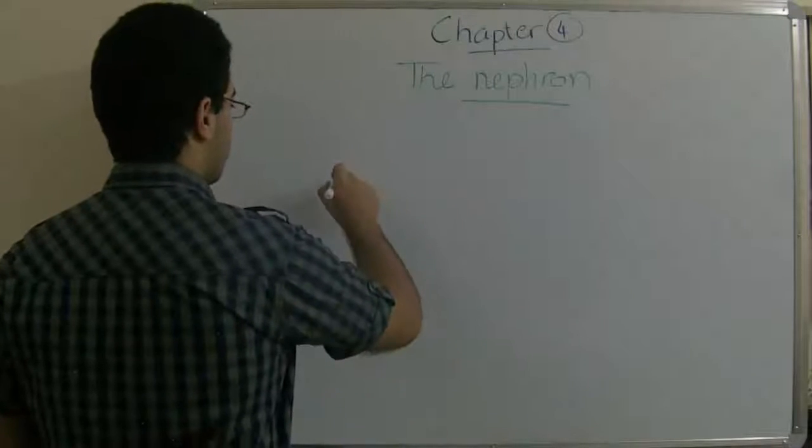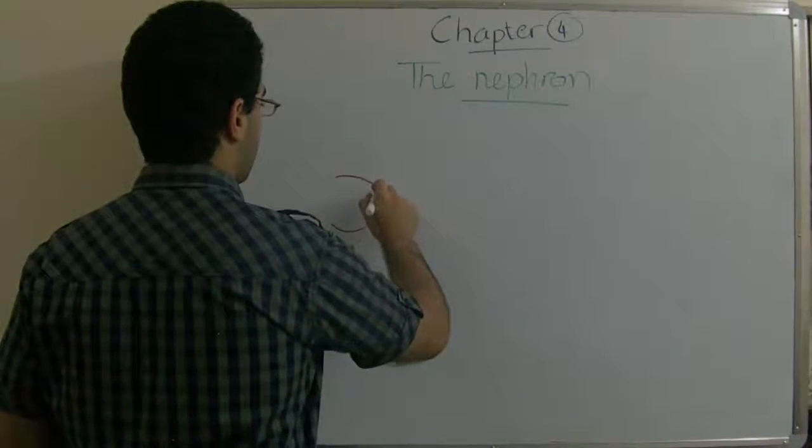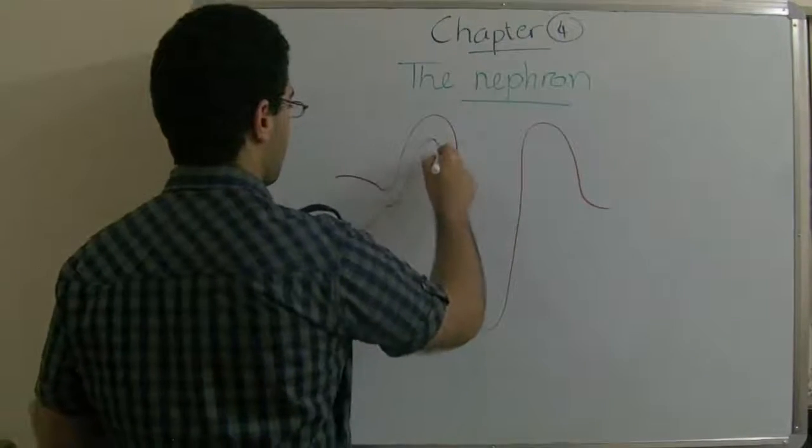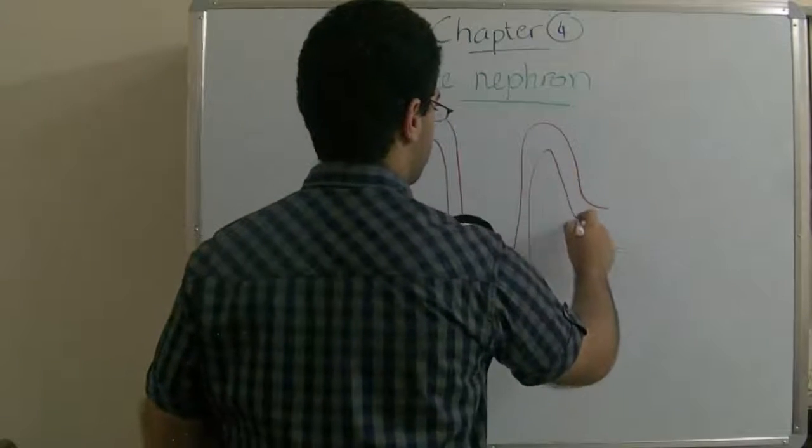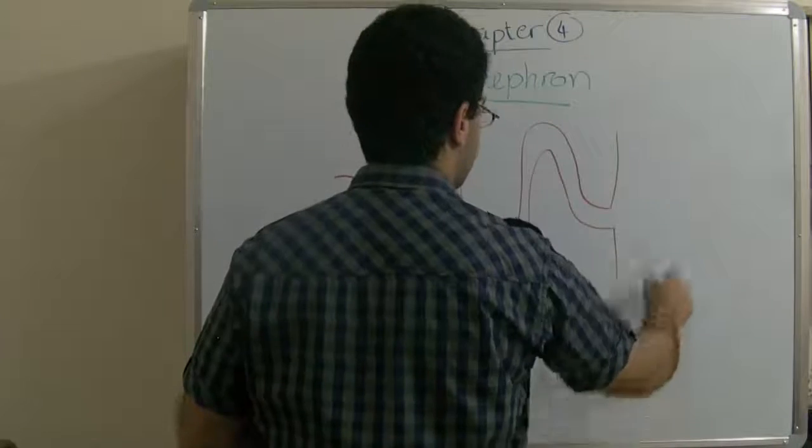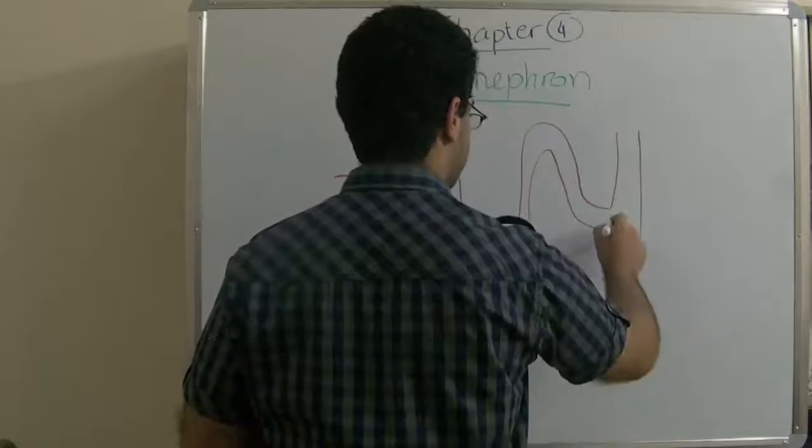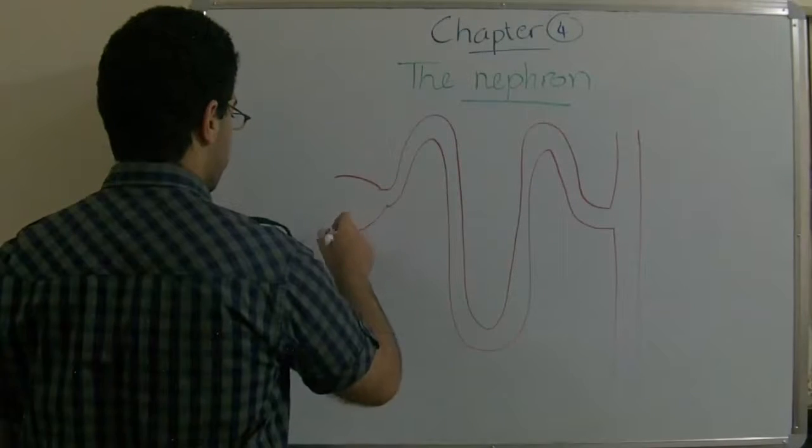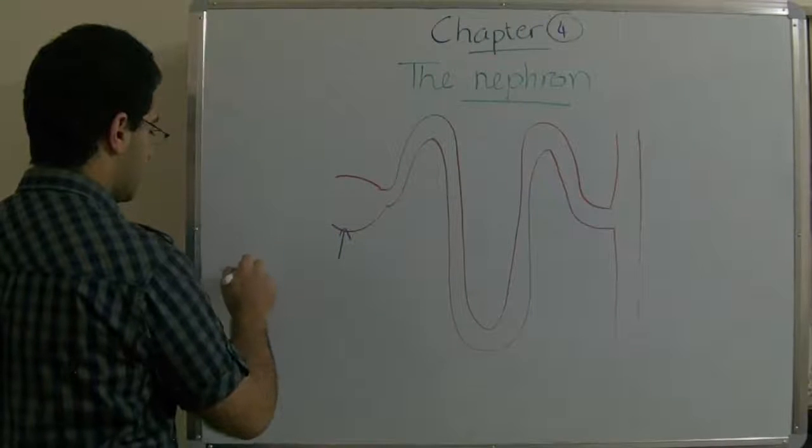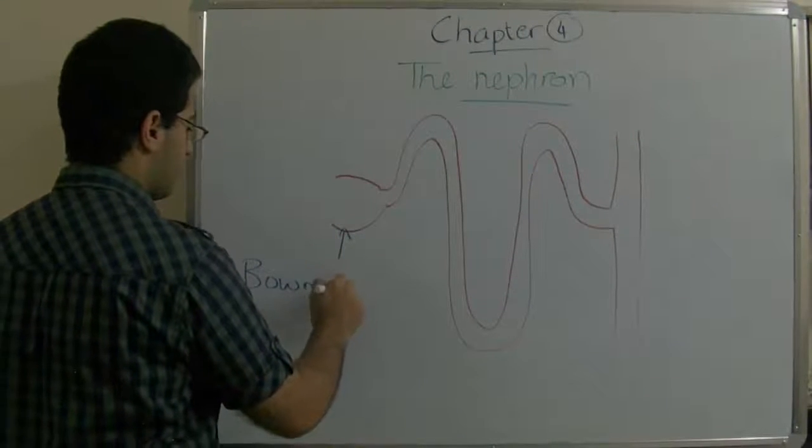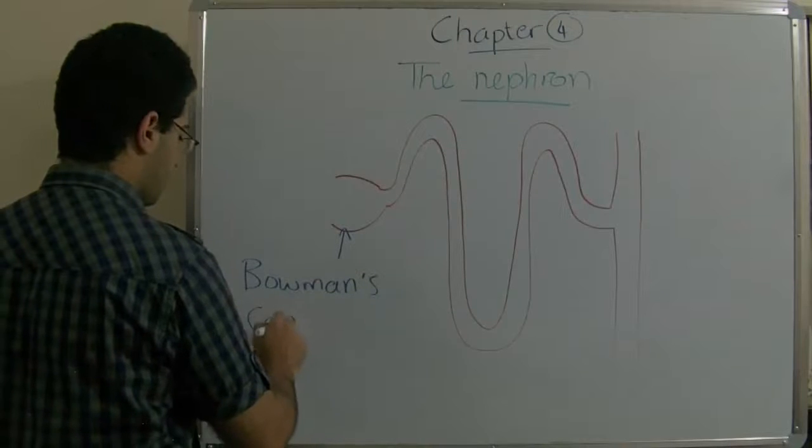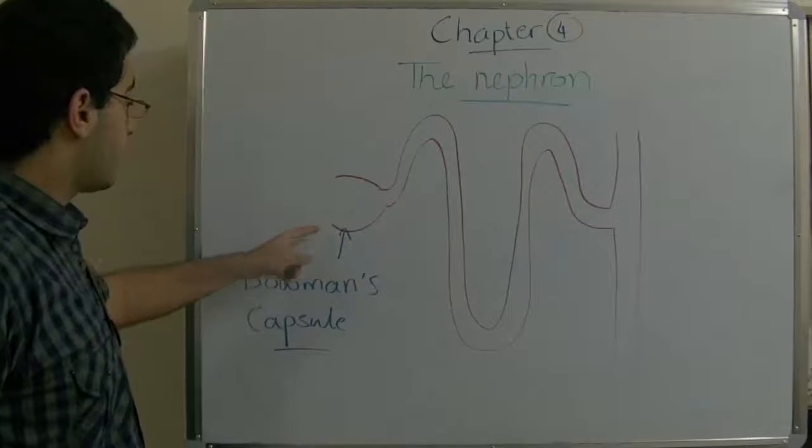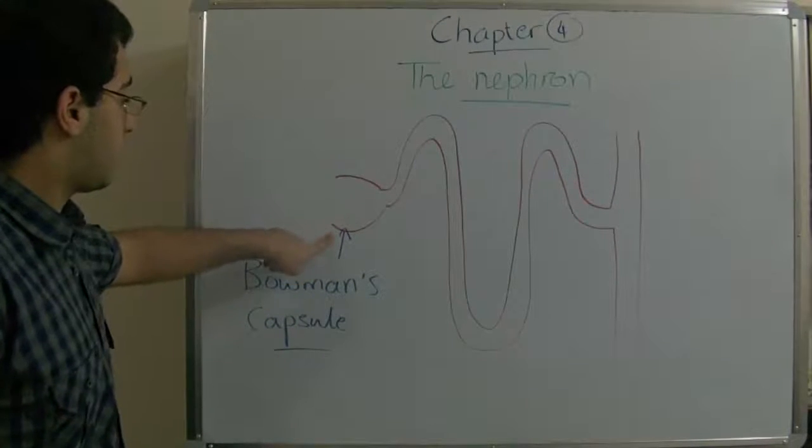So the structure of the nephron looks like this. It begins with this capsule here. It's called Bowman's capsule - a cup-shaped, thin-walled or double-walled Bowman's capsule.